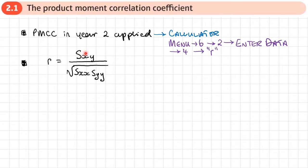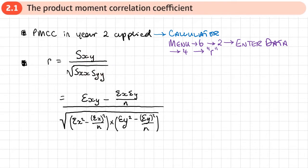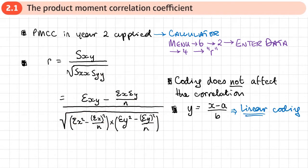Here's the formula — you'll recognize SXY, SXX, and SYY. Written out in full, it looks like this. The only other thing to note is that coding does not affect the correlation. As long as the coding is linear, the correlation of the data is unaffected once coded.